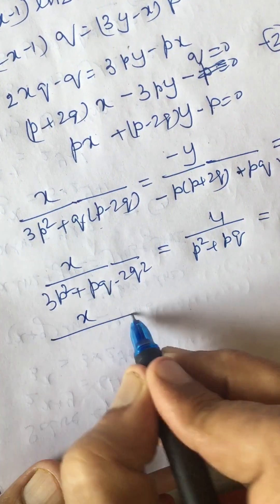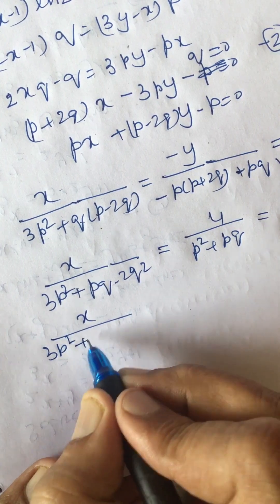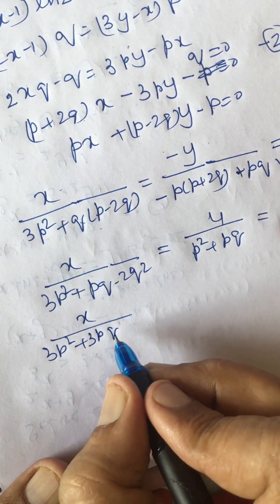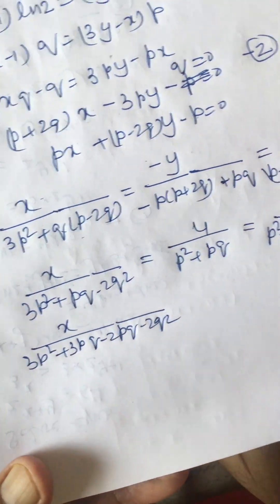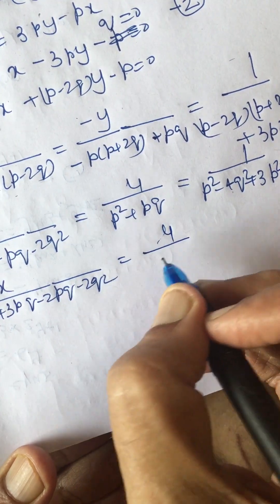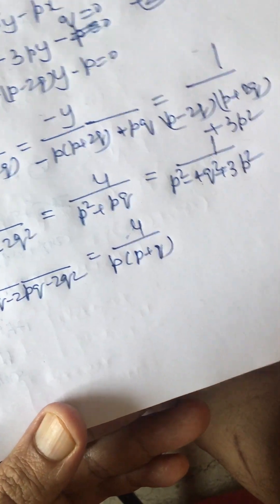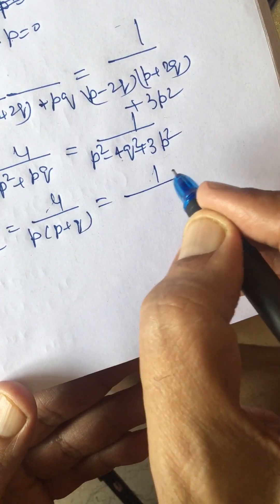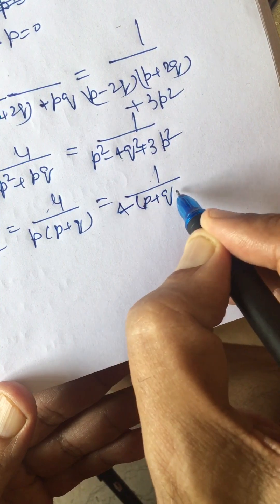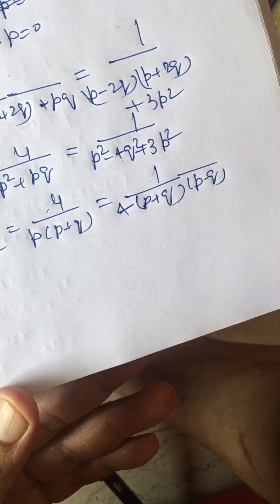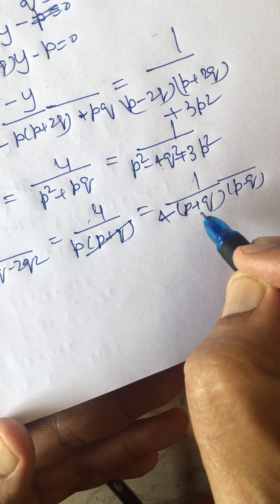We can further simplify: x divided by 3p squared plus pq minus 2pq squared, and y divided by a term with p and q. We can write the numerator as p plus q times 4p minus q, and the factor p plus q cancels with the denominator's p plus q.